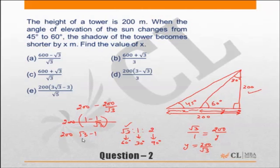Which answer is that? Let's multiply by root 3 by root 3. So it will become 200 times 3 minus root 3 by 3. So this is the answer: 200 into 3 minus root 3 by 3. This is my correct answer.